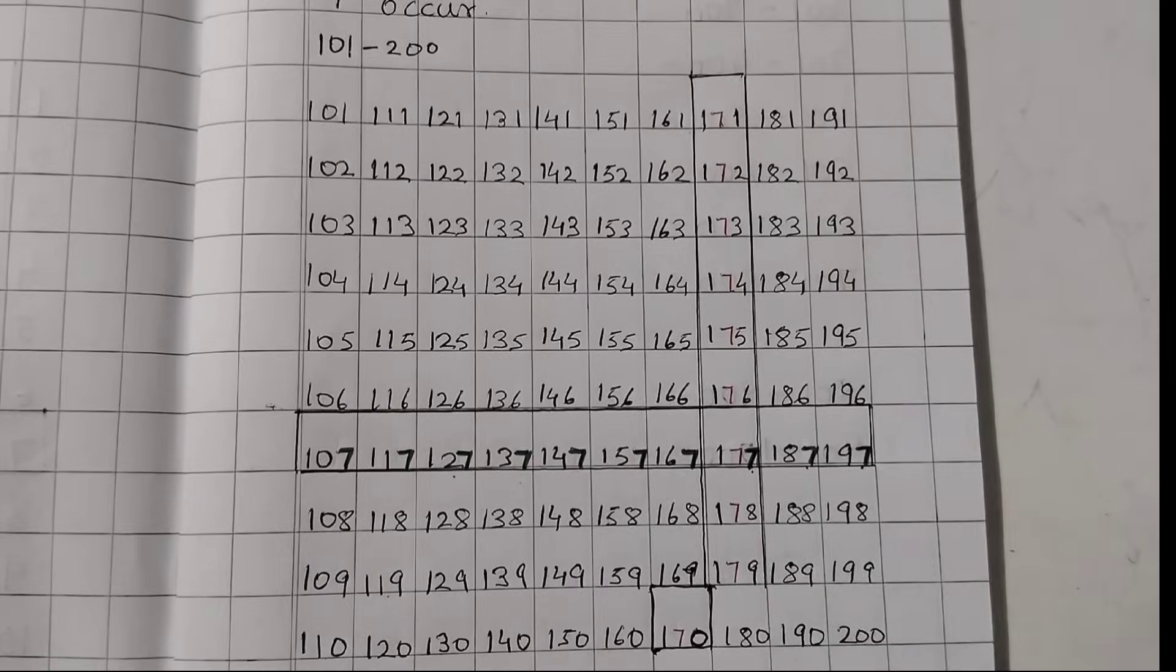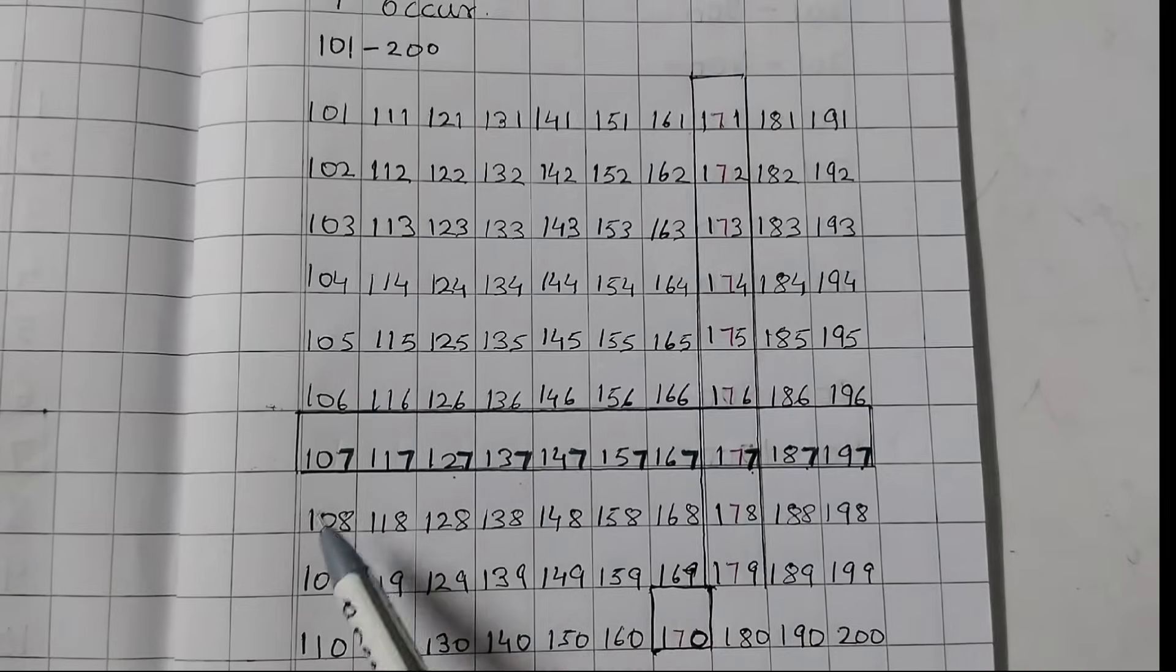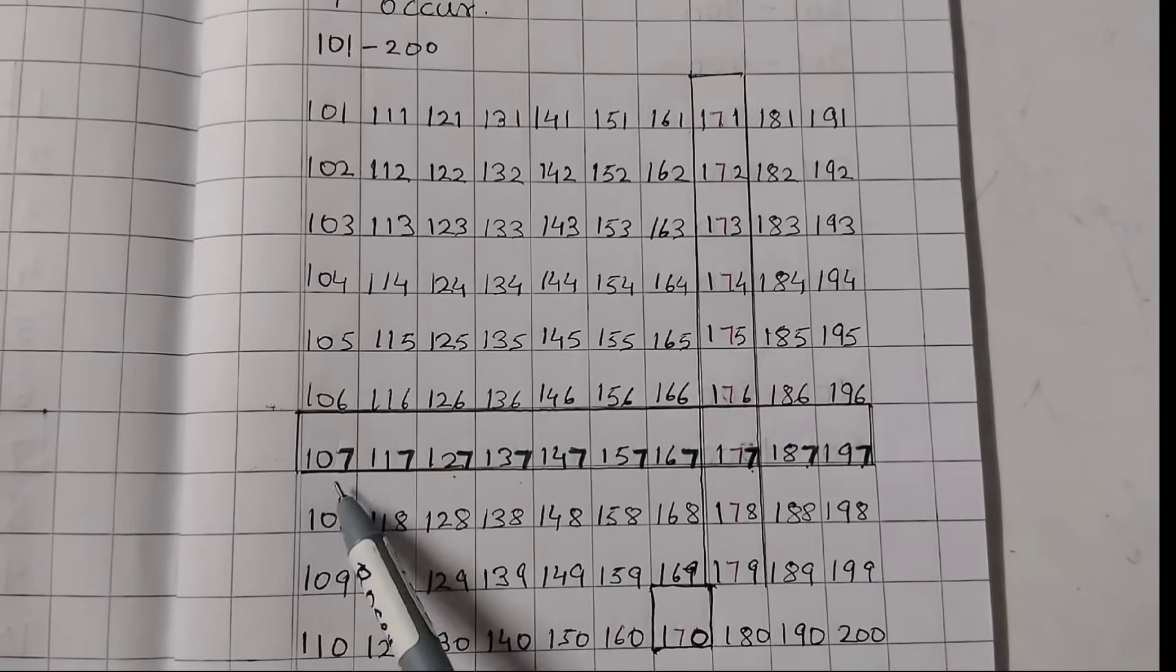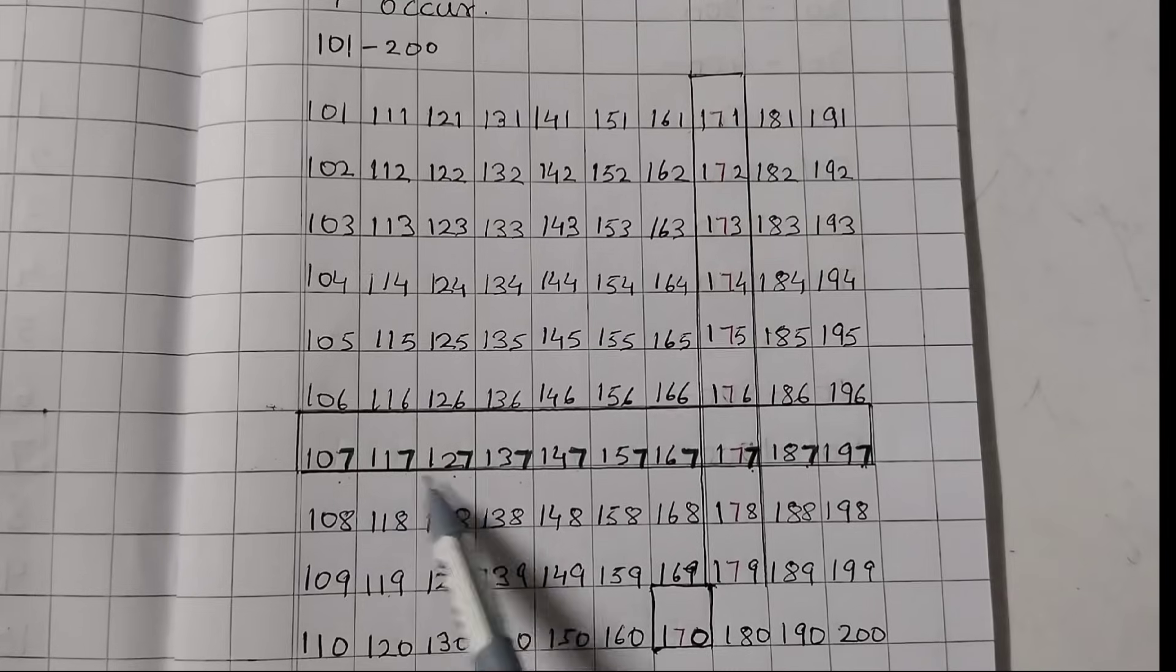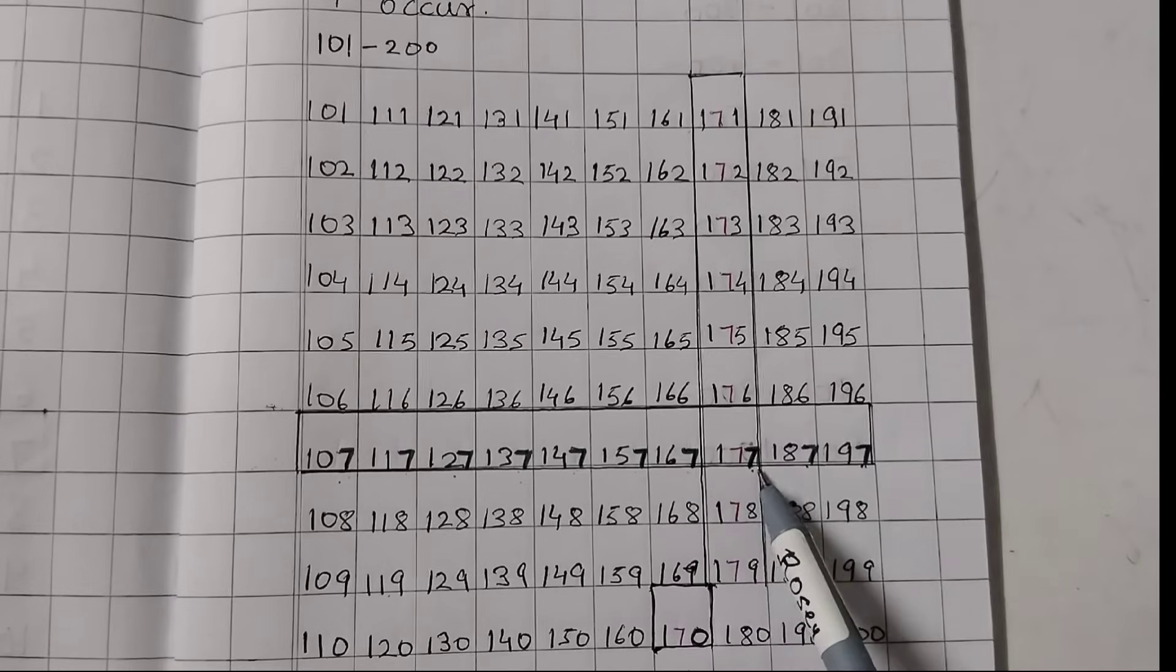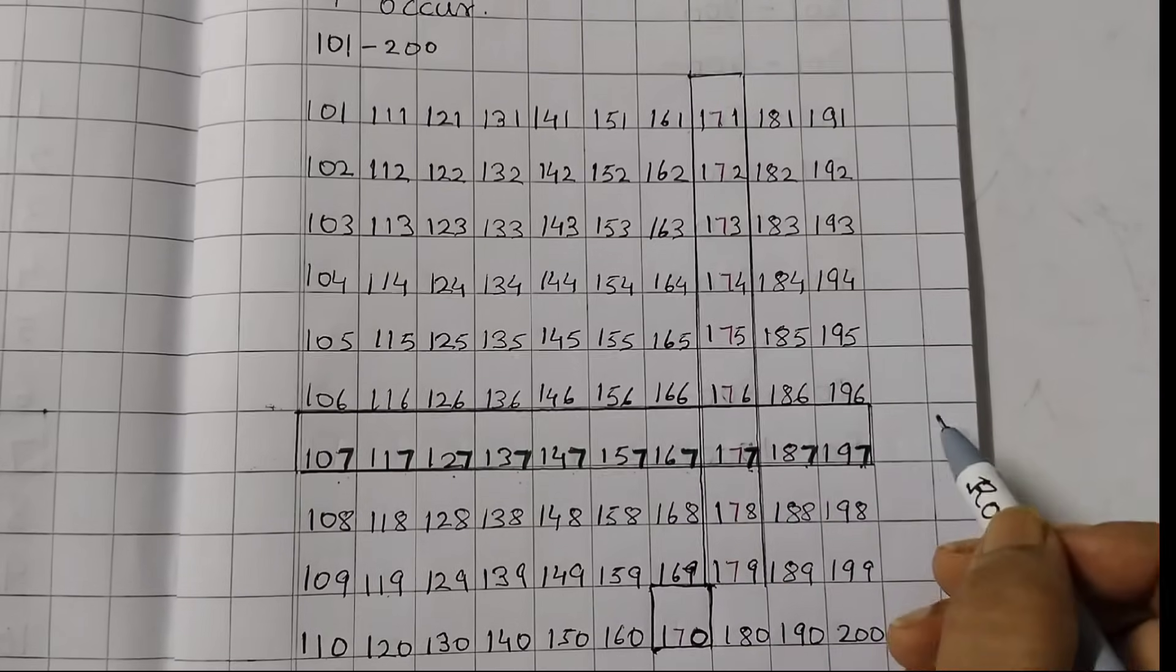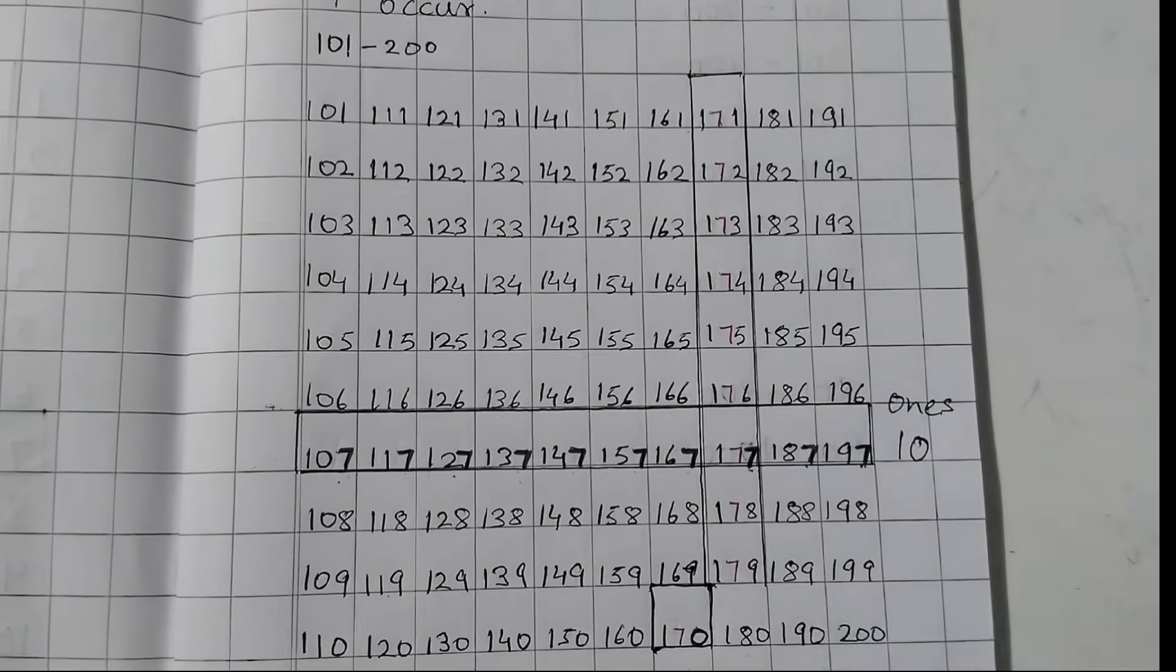So, now see here. If you see this row, 107 to 197, in ones place: 1, 2, 3, 4, 5, 6, 7, 8—we are taking this ones place—8, 9, 10. So, it appears 10 times in ones place. This is ones place.